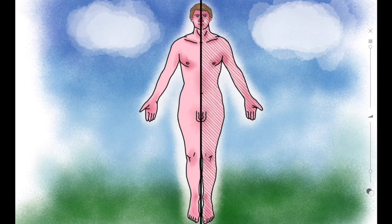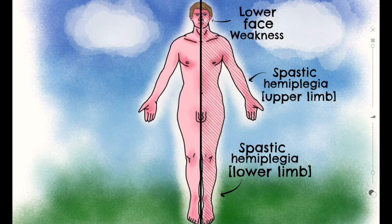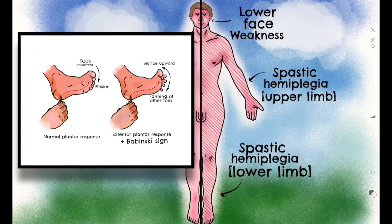Some clinical features of internal capsule stroke include lower face weakness, spastic hemiplegia of the upper limb, and spastic hemiplegia of the lower limb. Spastic hemiplegia refers to constant contractions of the muscles affected and often presents as paralysis. An important clinical sign is the positive Babinski sign, related to the plantar reflex. In a healthy individual, the normal plantar response to nociceptive stimuli is downward flexion of the hallux. A pathological response — upward extension of the hallux — is a positive Babinski sign, indicating an upper motor neuron lesion and damage to the corticospinal tract.